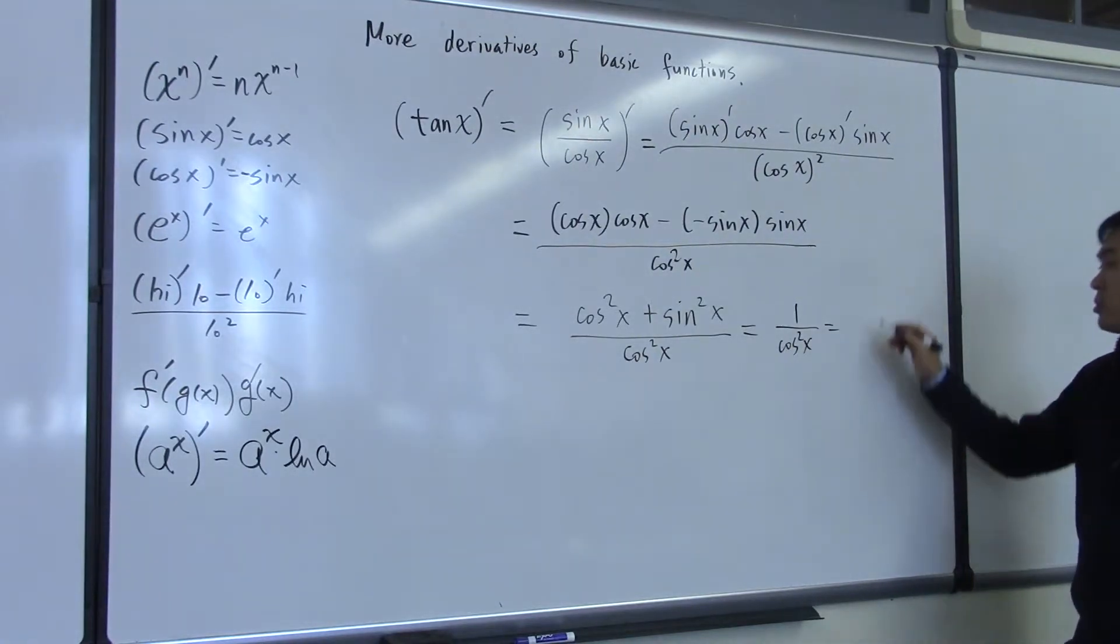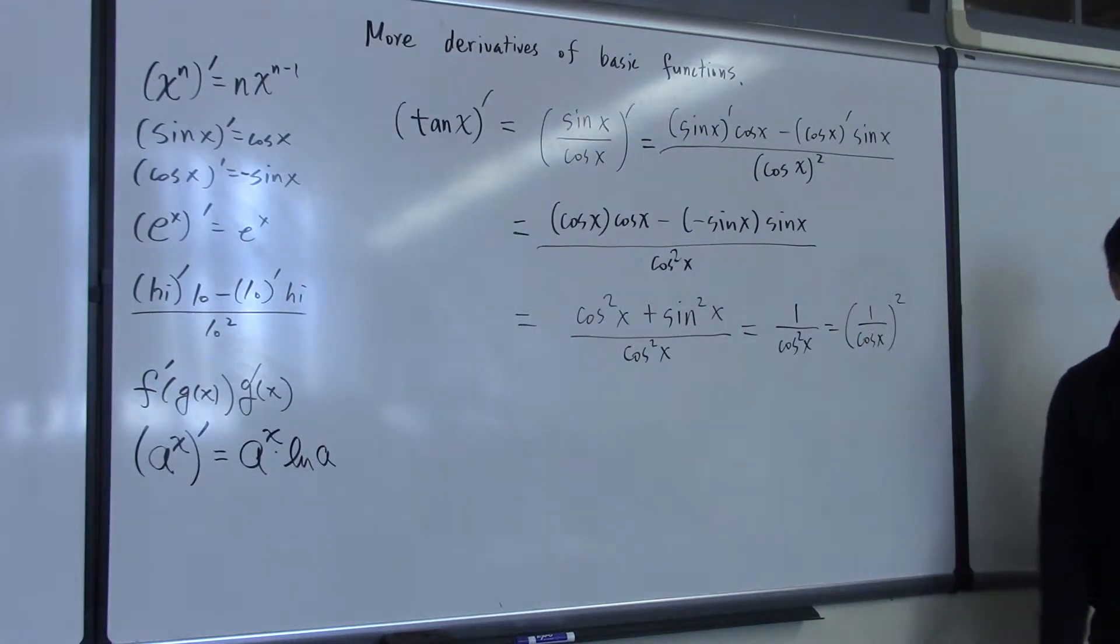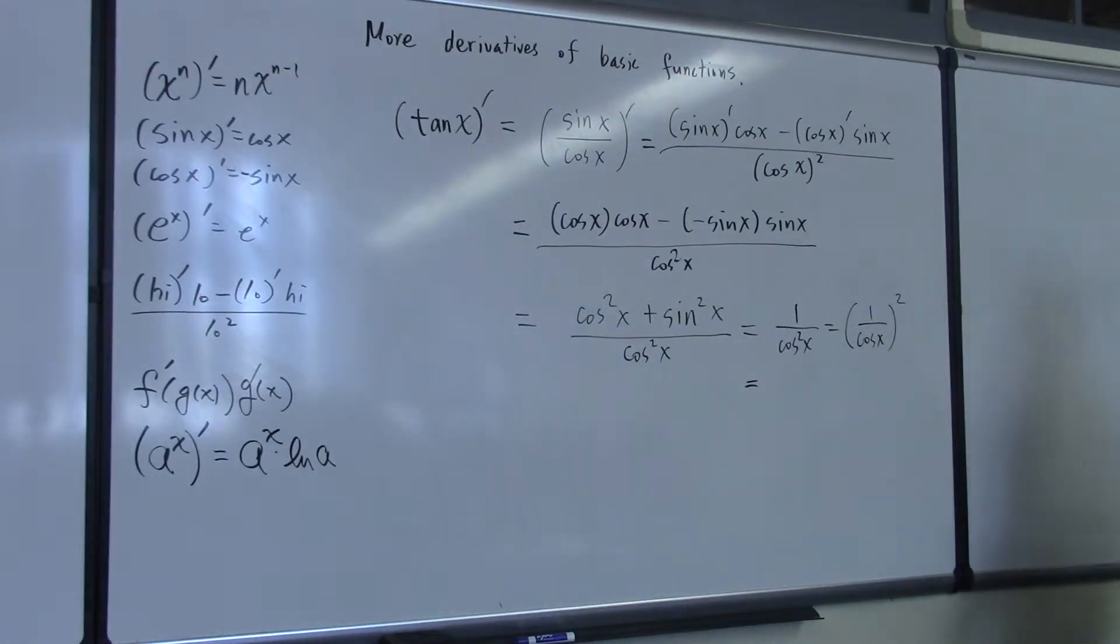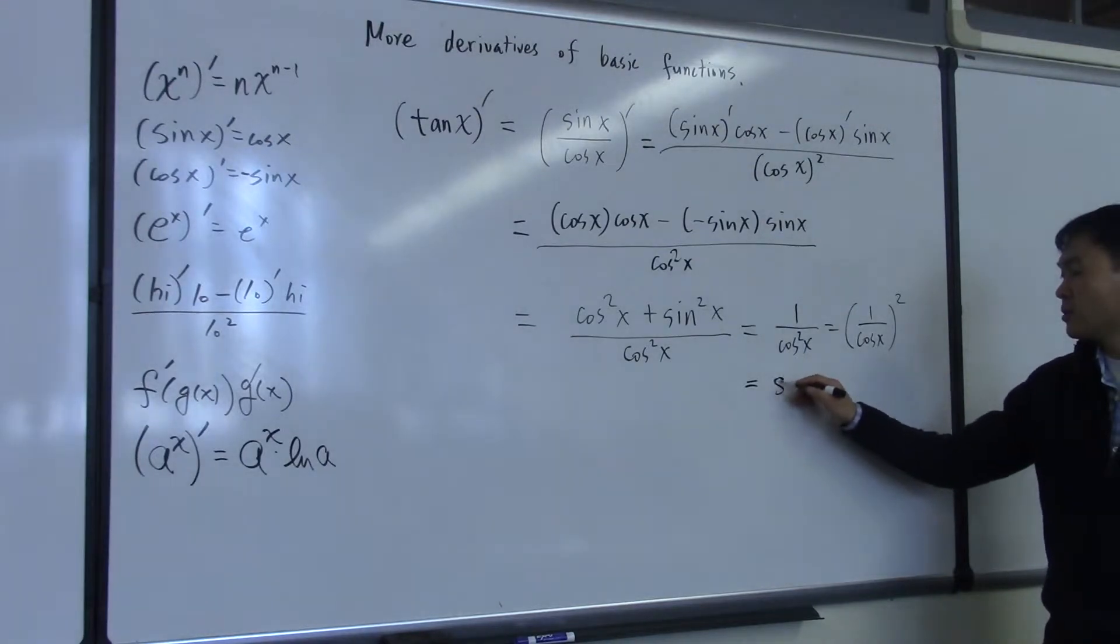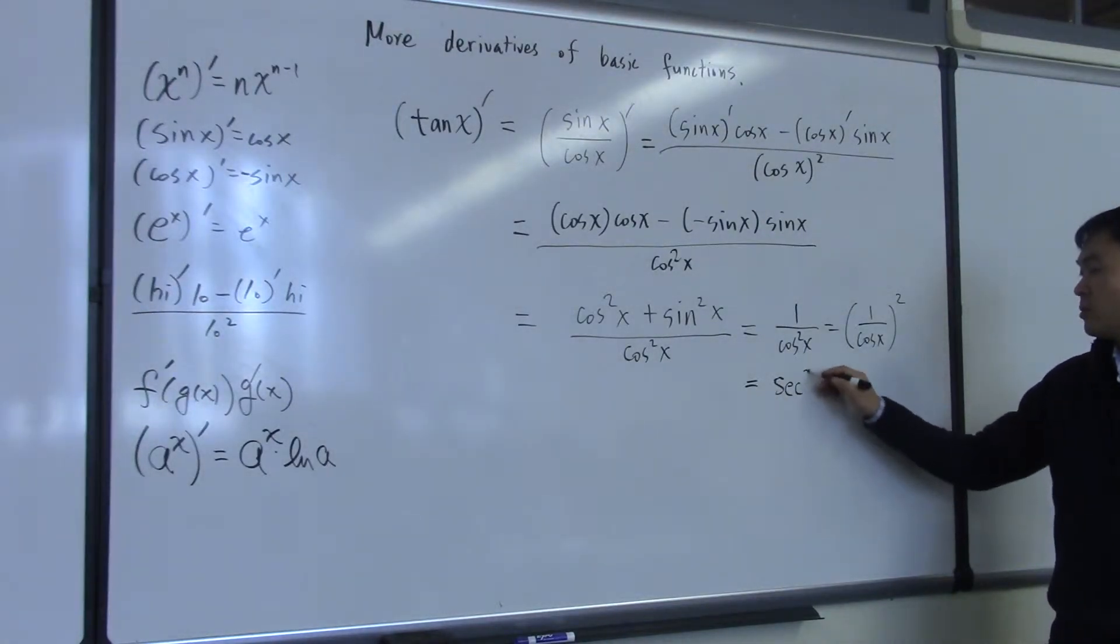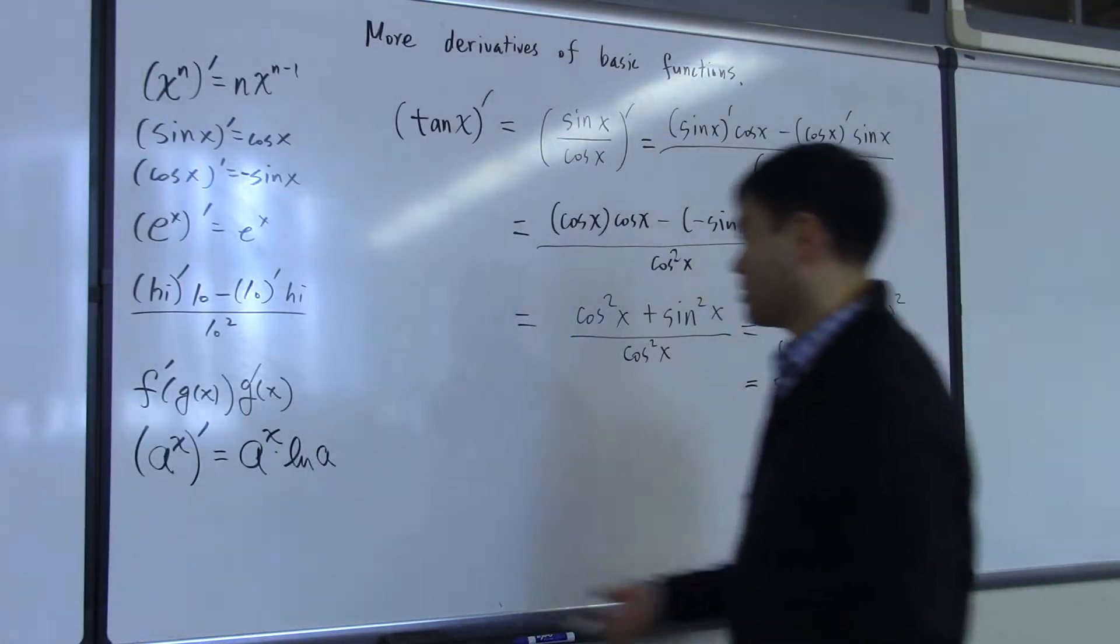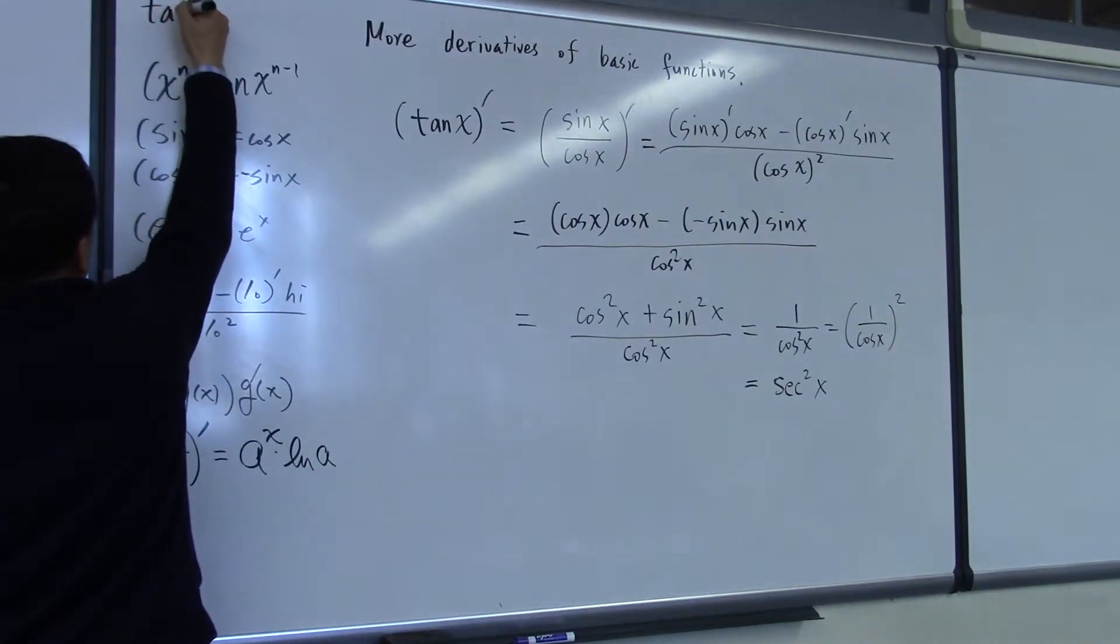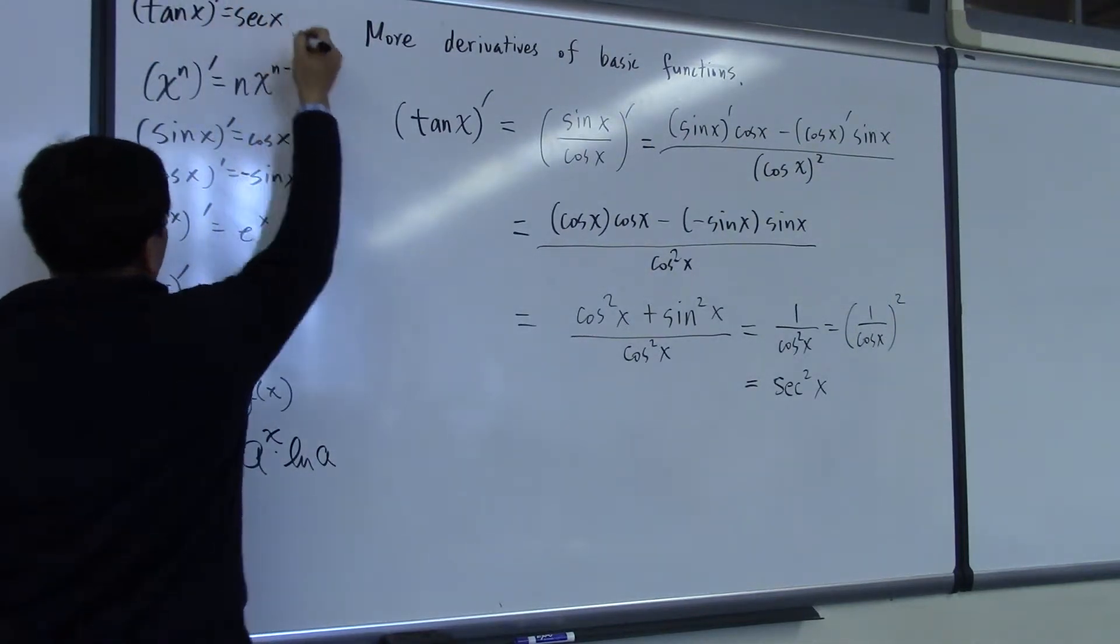And this can be viewed as one over cosine squared, right? What is one over cosine? There's another function for one over cosine, right? No, it's secant, right? It's secant. So we get secant squared of x. So we can put that in here. Right here. Tangent x prime is secant of x squared.